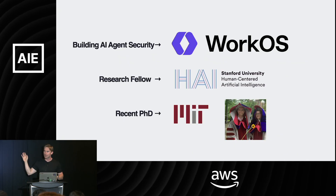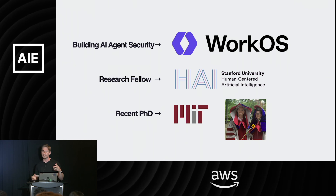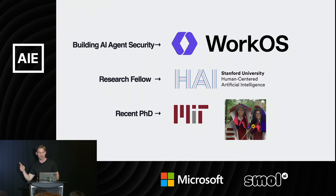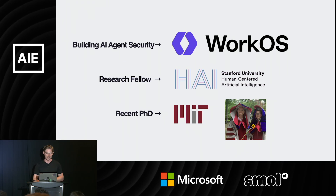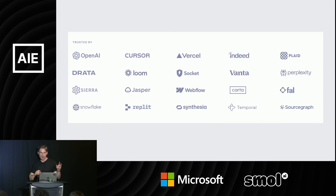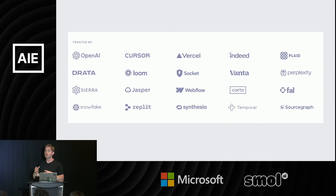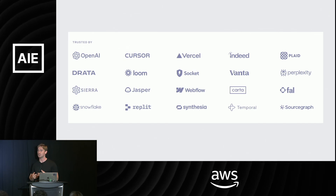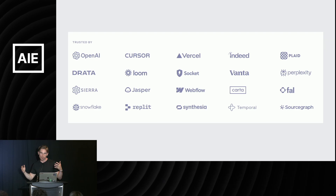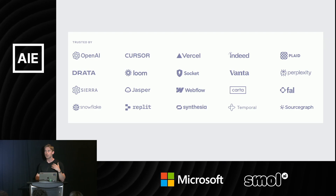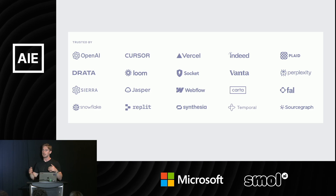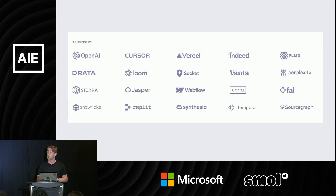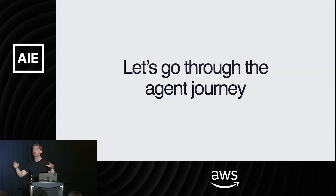Why am I talking to you? I work for WorkOS, which is an enterprise security vendor. I'm also a research fellow at Stanford working on safety for AI agents, and I just finished a PhD a couple of months ago. WorkOS sells to all of the AI labs, because the AI labs don't want to do the painful work of scaling security and auth operations into the enterprise. We've been thinking a lot about providing the glue that lets people build agents and seamlessly scale and sell them to everyone.